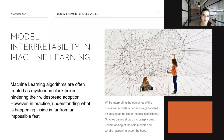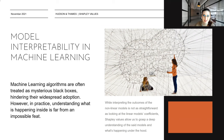Model interpretability in machine learning. Machine learning algorithms are often treated as mysterious black boxes, and this is honestly hindering their widespread adoption. People are basically scared because they are confused and don't know what happens inside or how to interpret the results. However, in practice, understanding what's happening inside of the model is far from an impossible feat. While interpreting the outcomes of nonlinear models is not as straightforward as looking at linear model coefficients, Shapley Values allow us to grasp a deep understanding of these models and what's happening under the hood of ML algorithms.